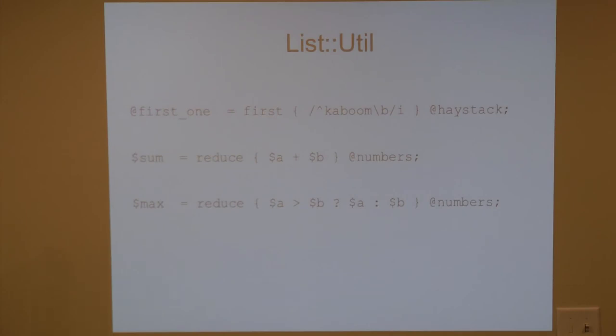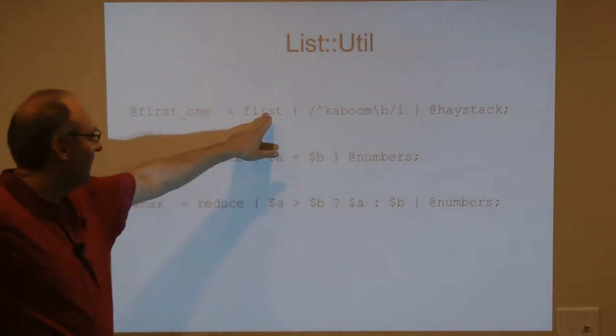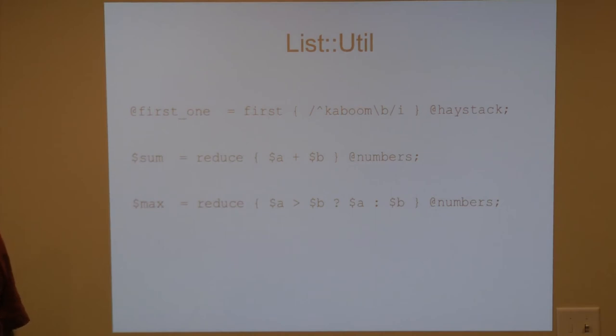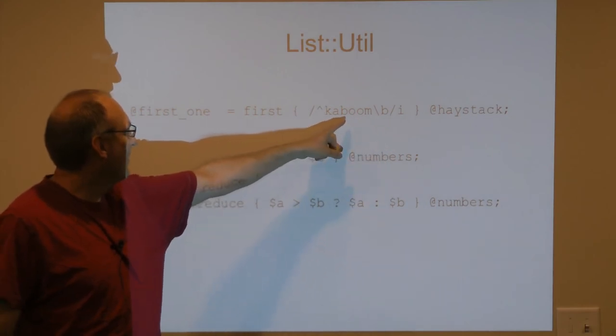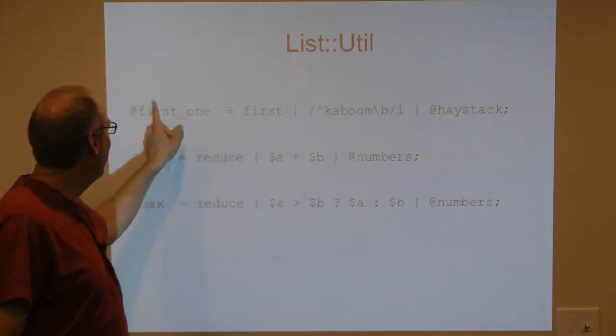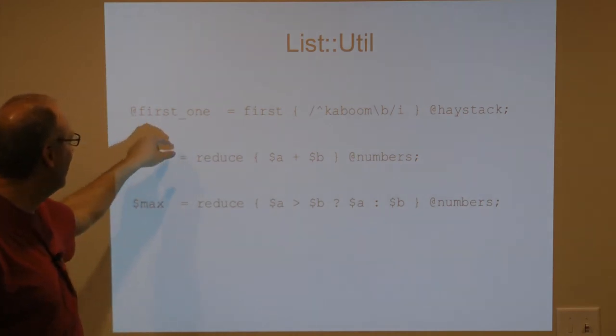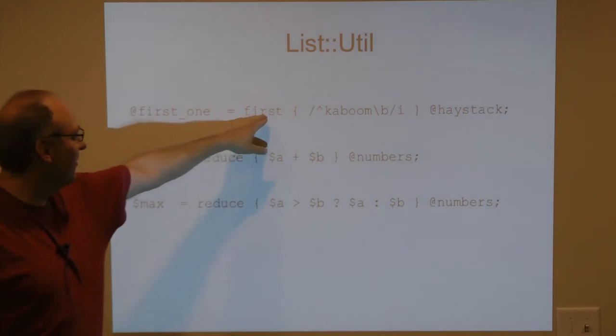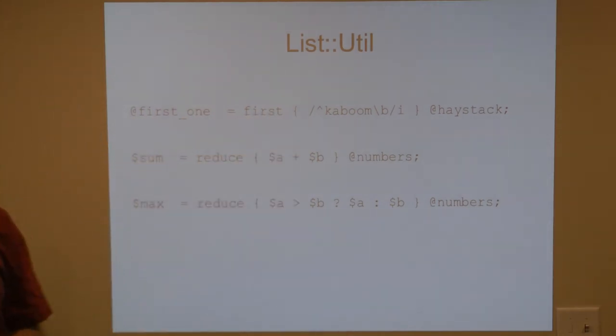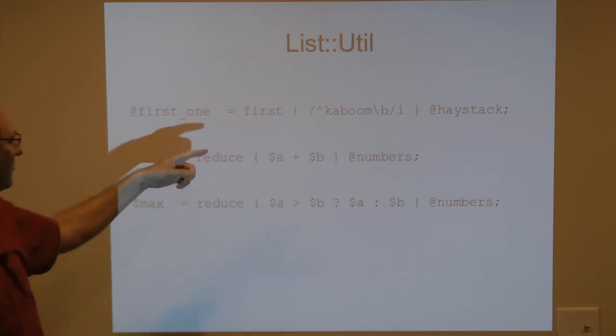So what does list utils provide us? It provides us a bunch of functions, but some of the ones that are most interesting are the first. First is like grep, except that it stops as soon as it's found the first boolean positive, the first hit. So we want to see if there is a kaboom in haystack. And if there is, then we'll just return that one. Actually, that shouldn't be an array. That should be a scalar. And it stops. So this is a... Grep is a... In big O notation, it's big O and it's a linear algorithm. First is also a linear algorithm, but it's optimized to stop once it finds one element that's positive or that's true. And it returns that element itself.